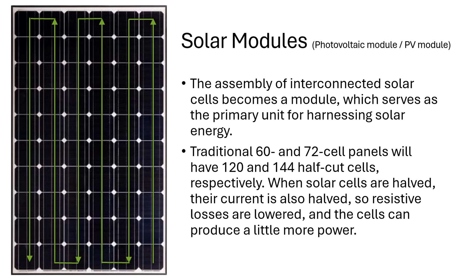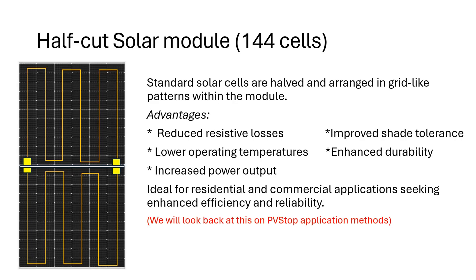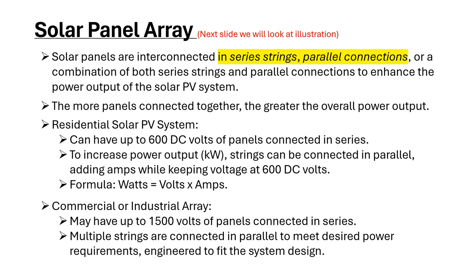The assembly of interconnected solar cells becomes a module, which serves as the primary unit for harvesting solar energy. Traditionally we have 60-cell and 72-cell panels, and also 120-cell panels. These days we also get 144-cell half-cut cells, which are quite popular. These are ideal for residential or commercial applications seeking enhanced efficiency and reliability.